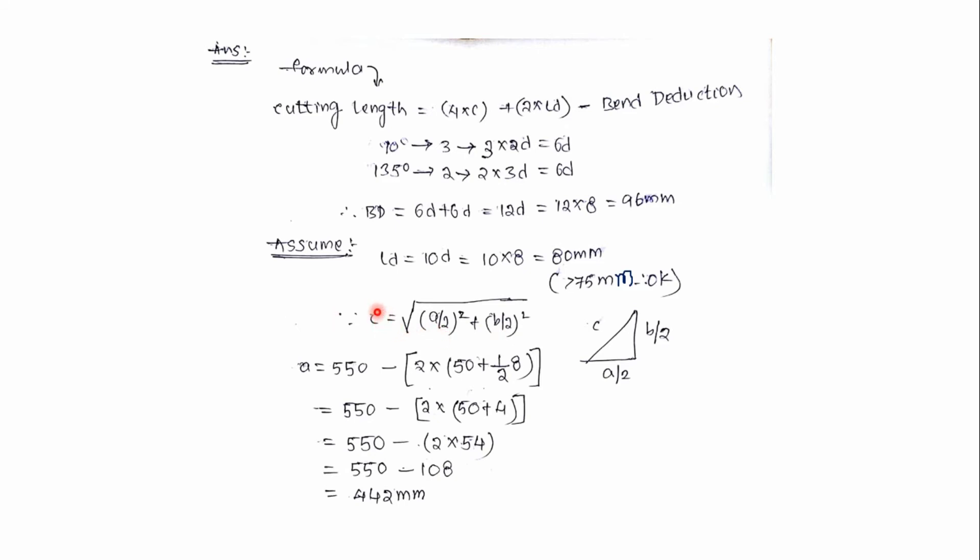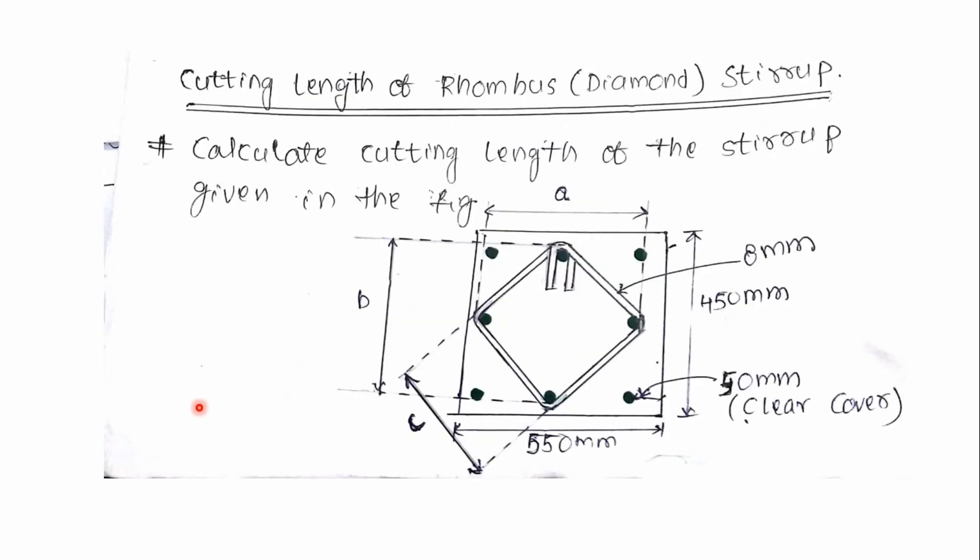To find out the value of c, we must know value of a and b. So first of all let's calculate the value of a. To get the value of a, what we have to do is we have to subtract the clear cover from this side and this side and half of the bar here and half of the bar here.